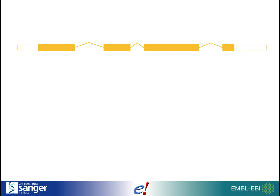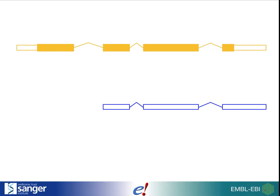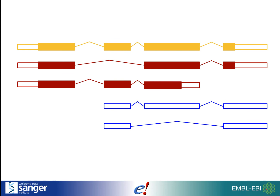Some transcripts will encode a protein, so within those exons there will be a coding sequence, plus 5' and 3' untranslated regions. Some transcripts are non-coding, so we'll only have non-coding sequence. When transcripts share exons with each other, they belong to the same gene. Genes can have many transcripts, both coding and non-coding, and single transcript genes are very rare in vertebrates.